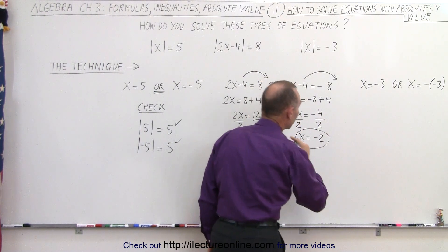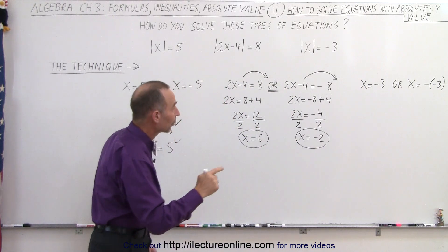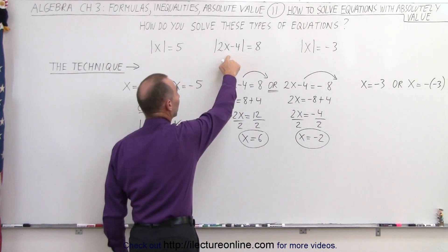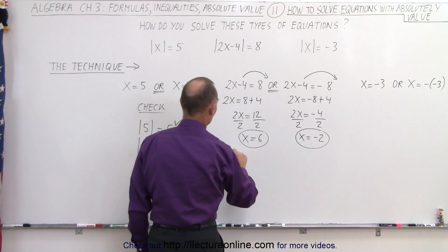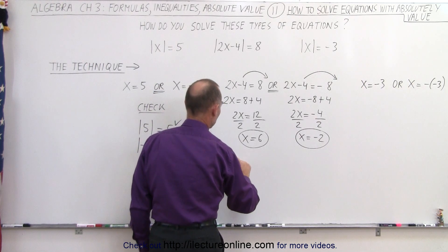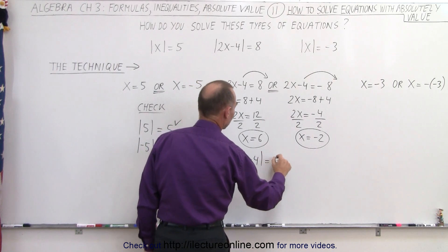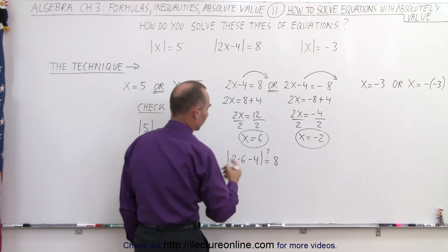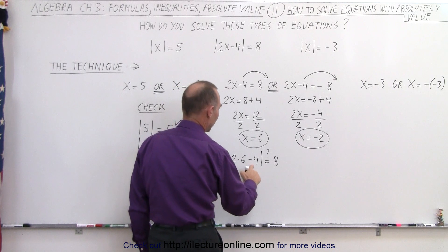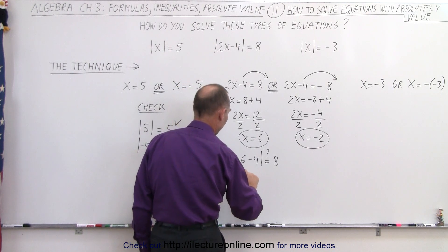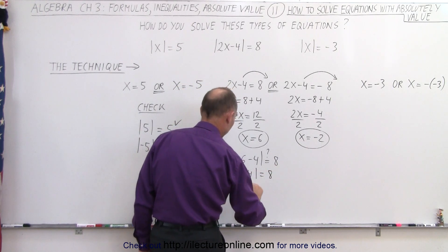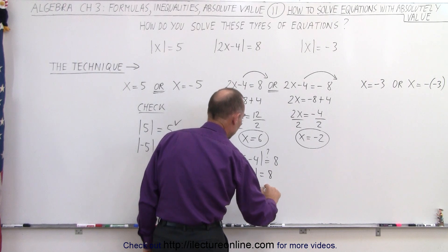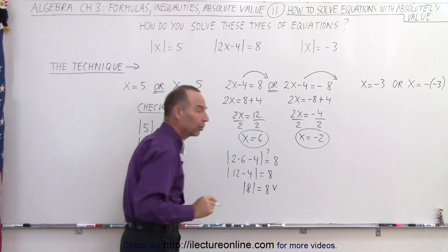So here are the two possible solutions. Now we're going to plug those into the original equation to verify. The absolute value of 2 times 6 minus 4 — is that equal to 8? That gives us 12 minus 4, so the absolute value of 8 equals 8. That is correct.